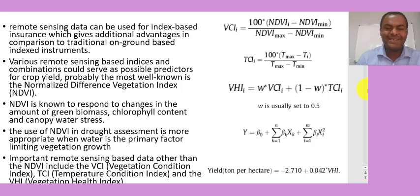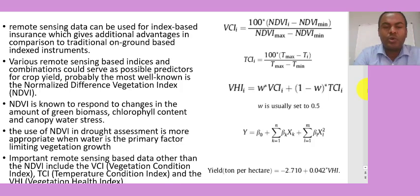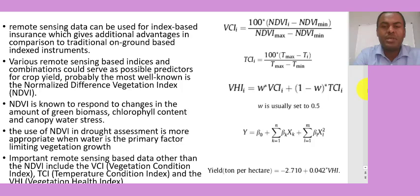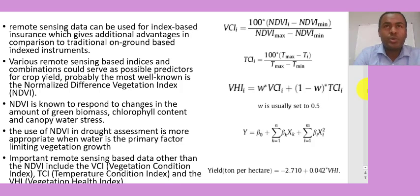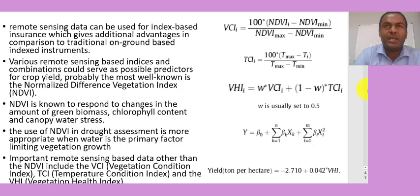Various remote sensing-based indices and combinations have served as predictors for crop yield. In Ethiopia, the most common disaster is drought, which usually causes crop failure and loss in crop yield. How much damage drought brings to society is a major question. In order to assess crop damage as a result of drought, we can use remote sensing data and develop vegetation indices to estimate crop damage in a certain area.